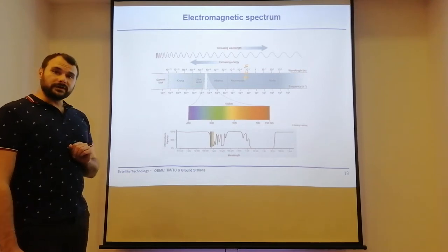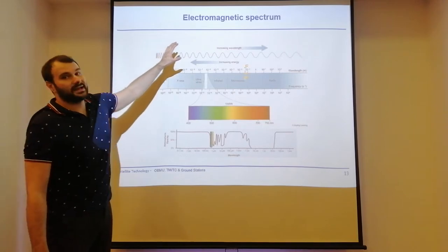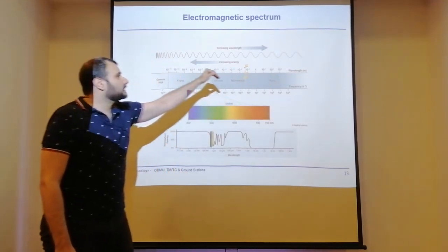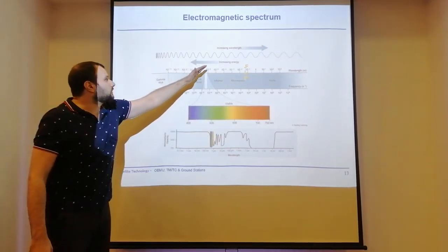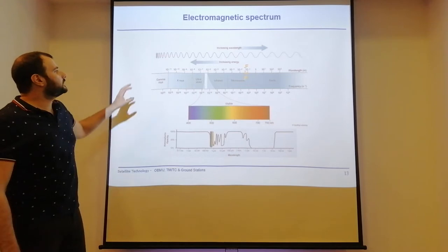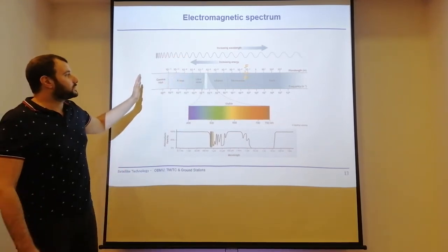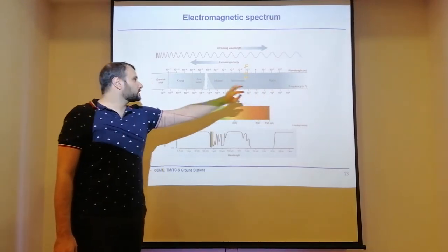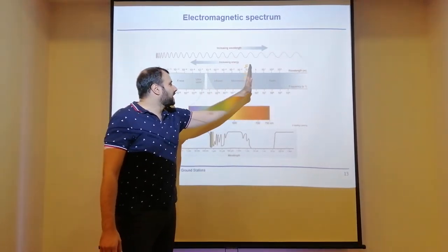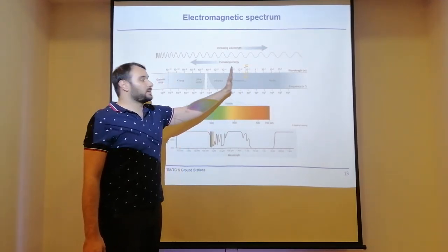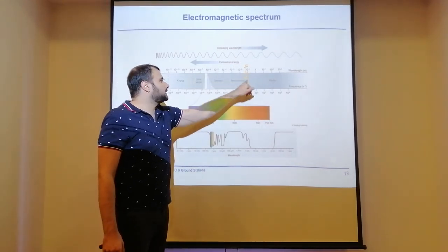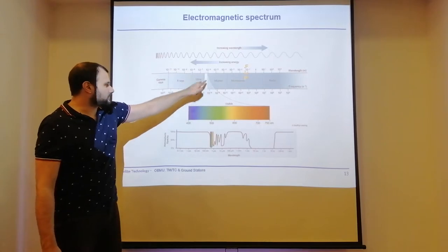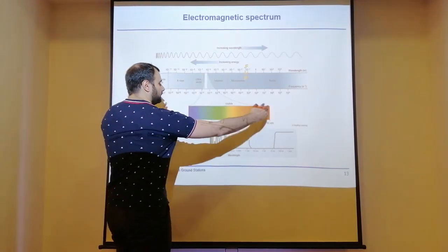Let's talk about frequencies. When we talk about frequencies, we talk about the electromagnetic spectrum. Going to the right means longer wavelength; going to the left means shorter wavelength. We categorize these as gamma rays, X-rays, ultraviolet, infrared, microwaves, and radio waves. Most satellites operate in the upper radio band to the microwave section. For instance, Flying Laptop operates at 2.2 to 2.4 gigahertz. The visible spectrum of visible light covers just a very short range within this broader picture.